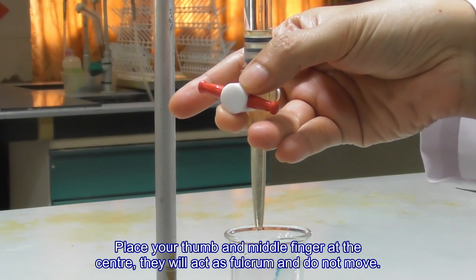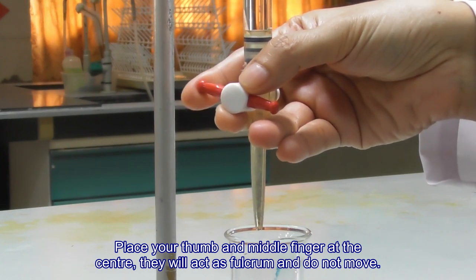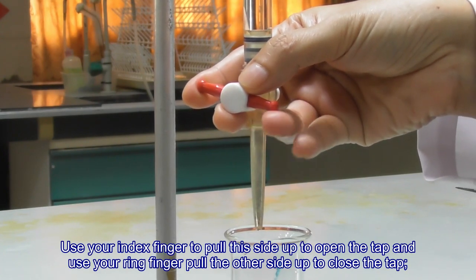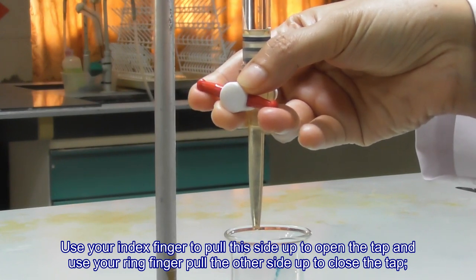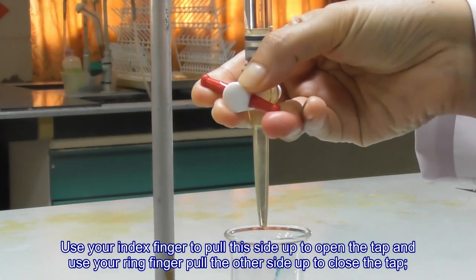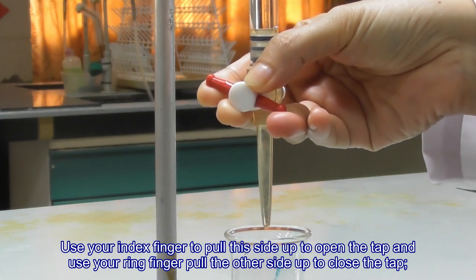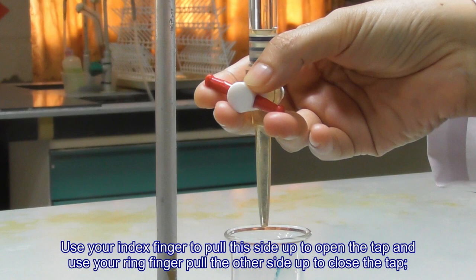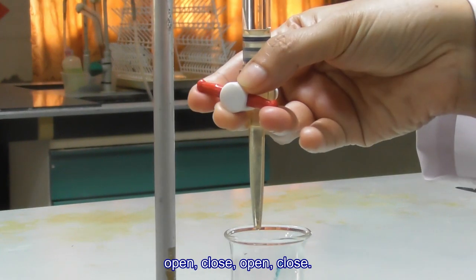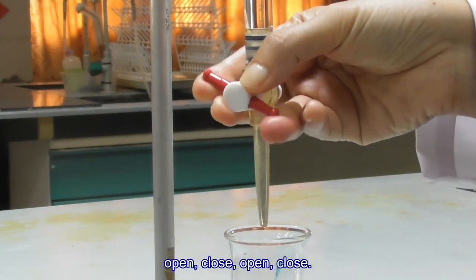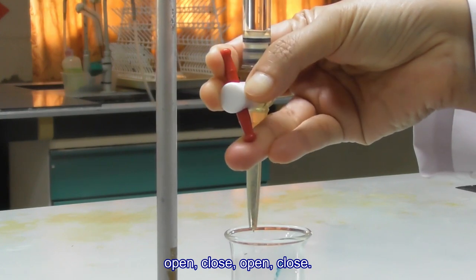They will act as fulcrum and do not move. Use your index finger to pull this side up to open the tap, and use your ring finger to pull the other side up to close the tap. Open, close, open, close.